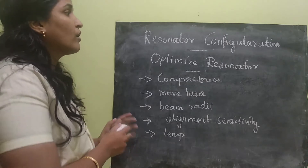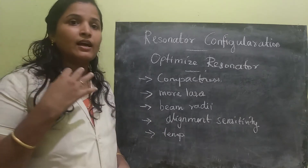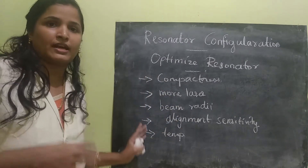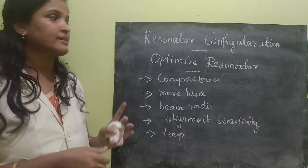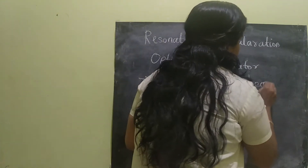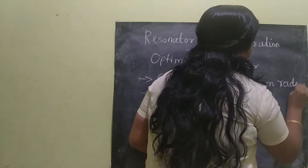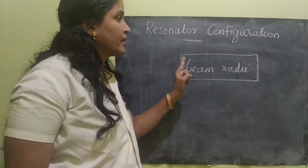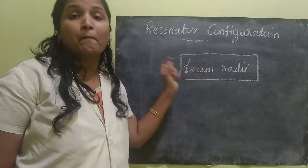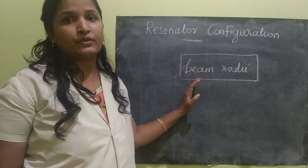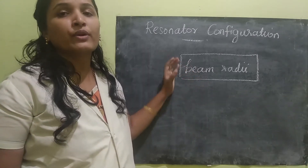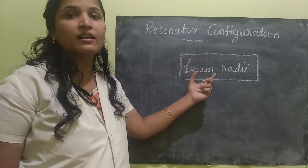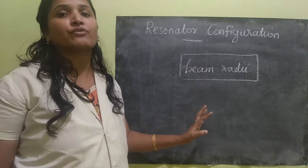Now, why do we go for laser resonator configuration — why are we taking this much care? The one and only reason is the beam radius. The main reason is that the beam radius should match the radius of the pumped region. That is why we do all the optimization. Our ultimate aim is to make the beam radius equal to the radius of the pumped region.